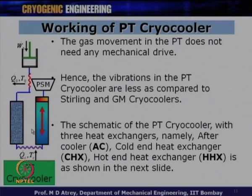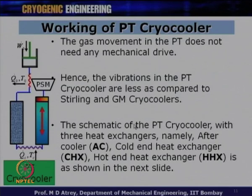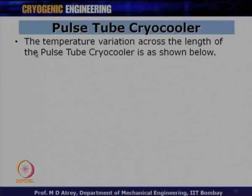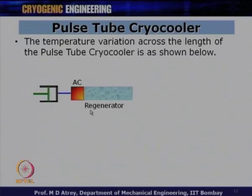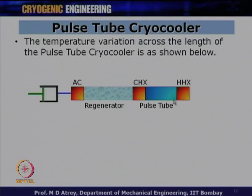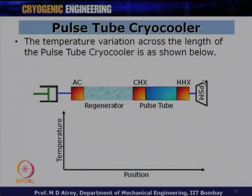The schematic of the pulse tube cryocooler with three heat exchangers — after cooler (AC), cold end heat exchanger (CHX), and hot end heat exchanger (HHX) — will be shown in the next slide. The components in line are: compressor, after cooler, regenerator, cold end heat exchanger, pulse tube, hot end heat exchanger, and PSM. This is called the inline configuration of the pulse tube, where gas travels in a straight line and returns in a straight line.